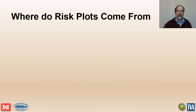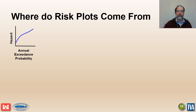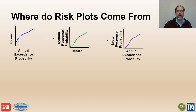Now let's walk through the development of the risk plots. The risk estimate starts with a hazard curve defining the hazard as a function of the annual exceedance probability. Next is a system response curve defining the probability of failure as a function of the hazard. These two curves are combined to obtain a curve defining the system response as a function of the annual exceedance probability. The area under this combined curve equals the annual failure probability — the little f value plotted on the little fn plot.